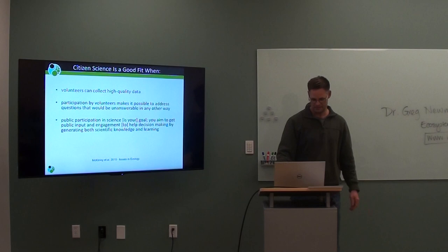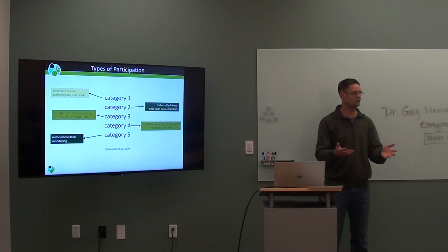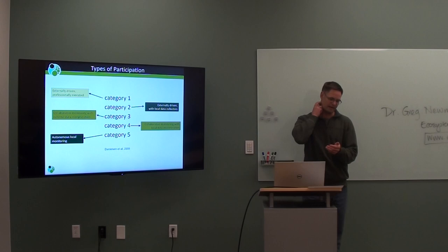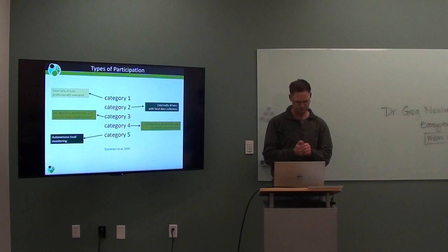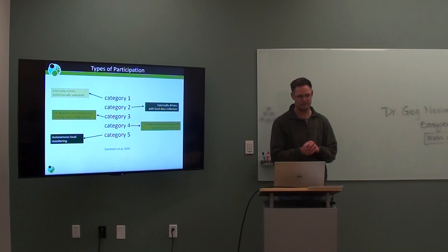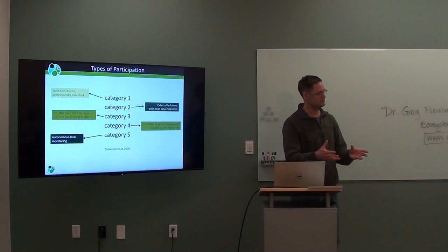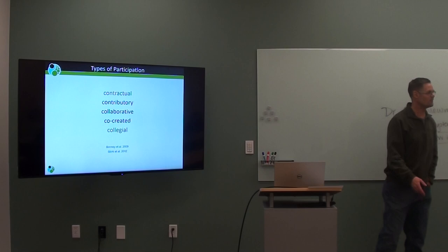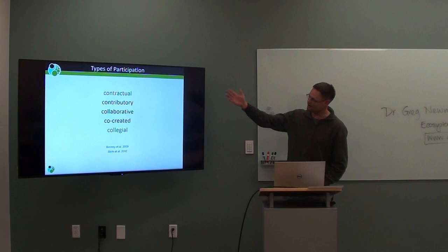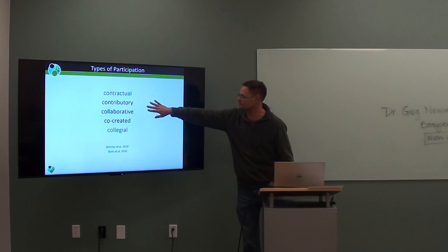Different types of citizen science range from externally driven, professionally executed projects to collaborative monitoring with external data interpretation, to autonomous local monitoring. More recently these have been described using 'C' terms: contractual, contributory, collaborative, and co-created — with contributory, collaborative, and co-created being the most commonly discussed.